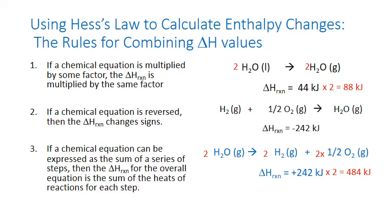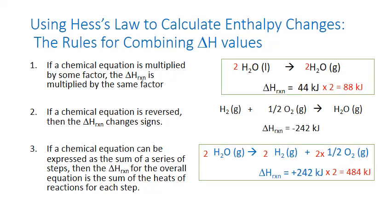The last rule is that if you can express a chemical equation as the sum of a series of steps, then the enthalpy of reaction for the overall equation is the sum of the enthalpies for each step — this is Hess's law. It turns out that these two equations we've manipulated — the vaporization of liquid to gaseous water and the decomposition of gaseous water — add together to be our two steps. We then add together their enthalpies to get the final enthalpy.